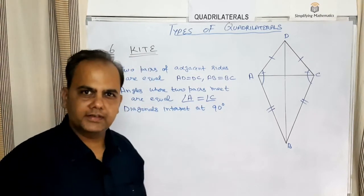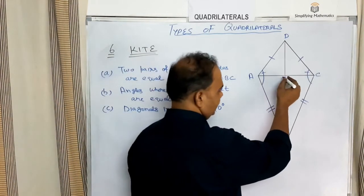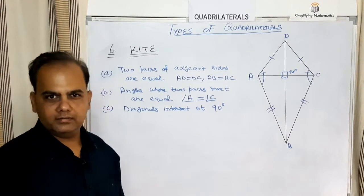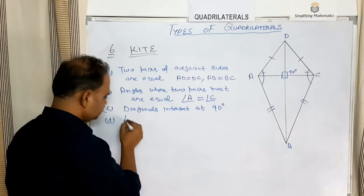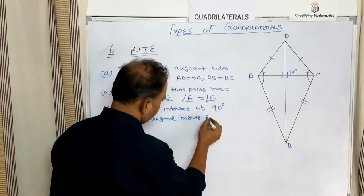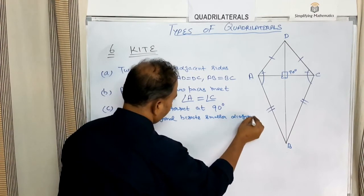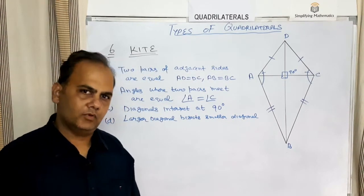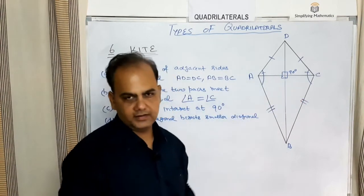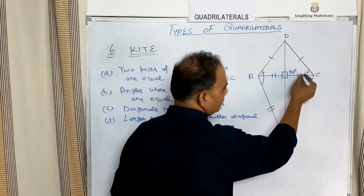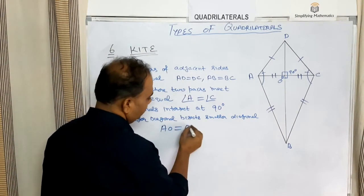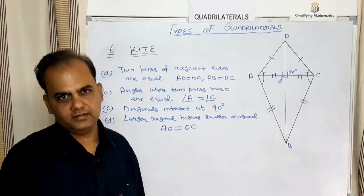The third property of a kite is that the diagonals intersect at 90 degrees. The fourth property is that the larger diagonal bisects the smaller diagonal. In kite ABCD, BD is the larger diagonal and bisects AC, so if they meet at point O, then AO equals OC.